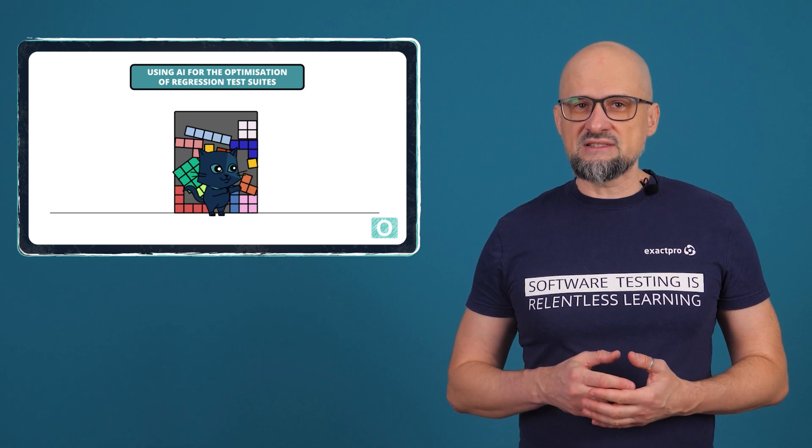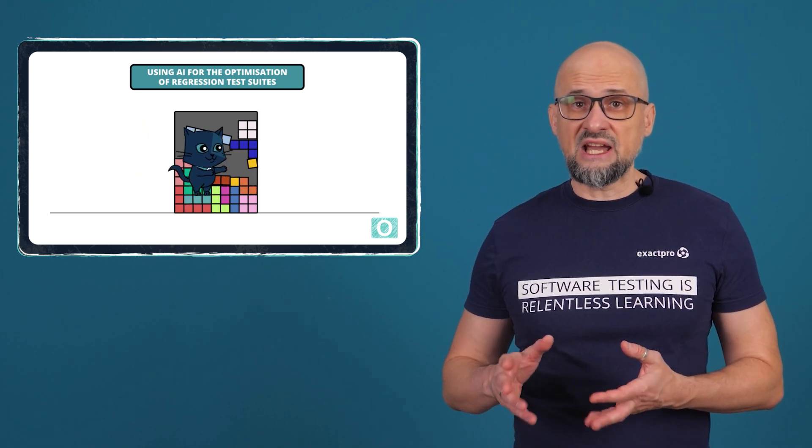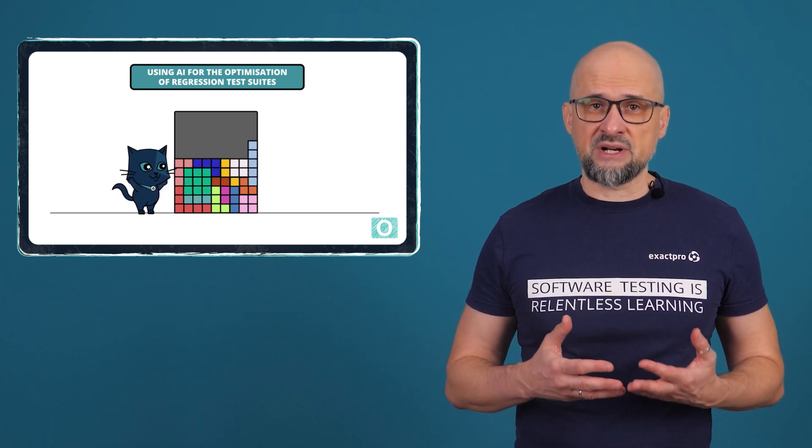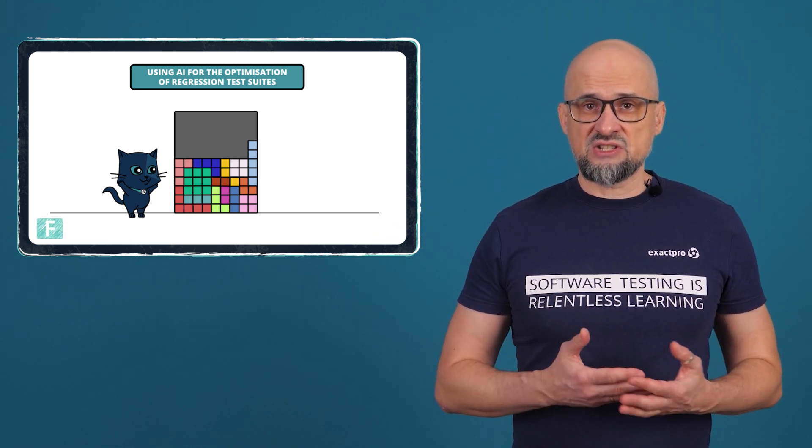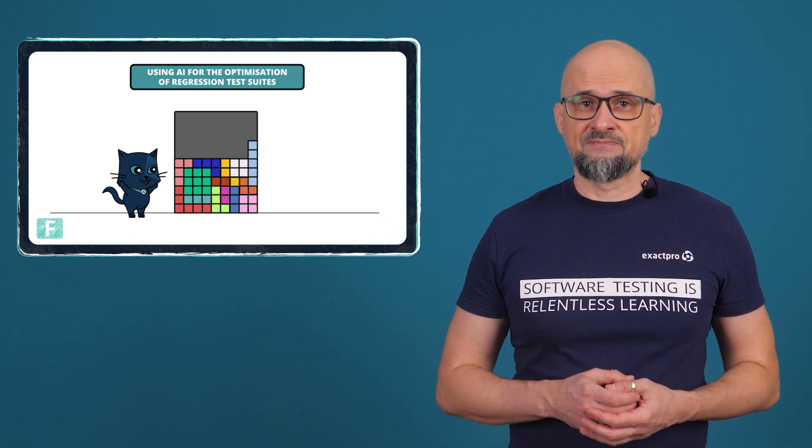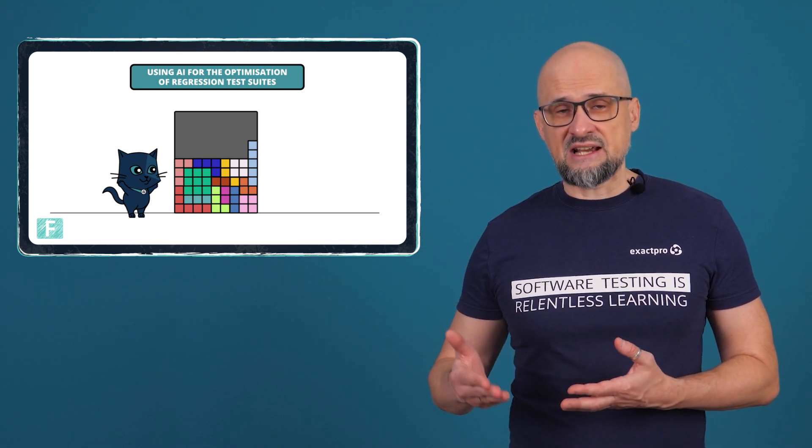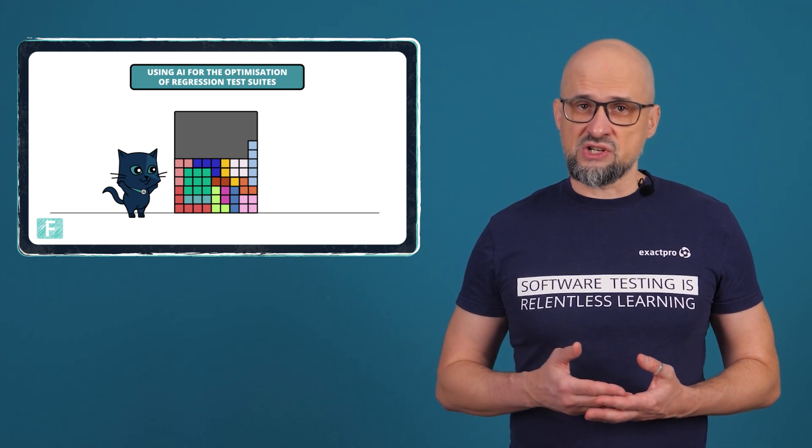Frequent system changes can cause the regression test suite to become too big. An AI-based tool can optimize the regression test suite by analyzing the information from previous test results, associated defects, and the latest changes that have been made. Research shows it can be potentially reduced by 50% while still detecting most defects and saving 40% the test execution duration time.